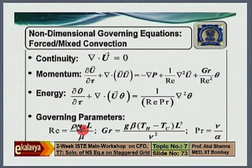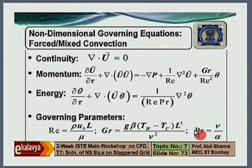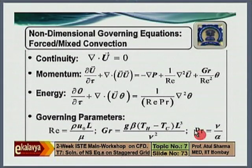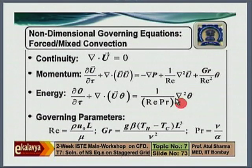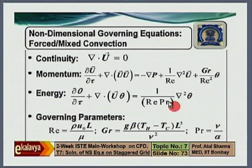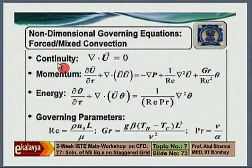Reynolds number is the ratio of inertia force to viscous force, Grashof number is the ratio of buoyancy force to viscous force, and Prandtl number is the third non-dimensional governing parameter. In your lab sheet, you solve one case where Grashof number is zero — which means the buoyancy term is zero — making it a forced convection heat transfer problem. For non-zero values of Grashof number, it becomes a mixed convection heat transfer problem. If you want to do a detailed investigation, you vary Reynolds number, Prandtl number, and Grashof number for a detailed scientific and engineering study, analyzing both qualitatively and quantitatively.